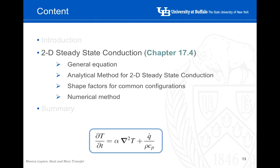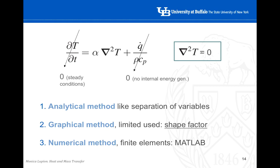Now let's move to the focus of today's presentation: two-dimensional steady state conduction. We have the same general equation defined in the previous class — the temperature dependence on time equals thermal diffusivity times the Laplacian of T plus a heat generation term. Without heat generation under steady conditions, we have the same Laplace equation regardless of whether we have one, two, or three dimensions. With more dimensions, the problem becomes more difficult to solve, and we have three different solution alternatives.